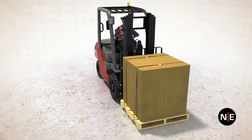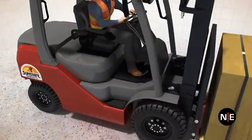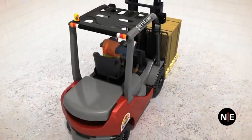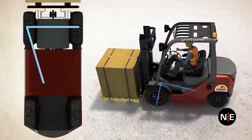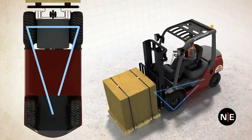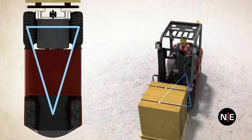A forklift has three points of stability: the two front tires and the pivot point on the rear axle. If you draw a line between the two front tires to the pivot point on the rear axle and back again, you get that forklift's stability triangle.